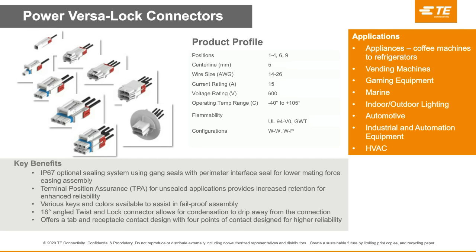Thank you. Another new TE product line that offers sealing is Power VersaLock, a wire-to-wire product line on a 5mm centerline that offers an IP67 sealing system when used with our optional interface and gang seals. It has a current rating up to 15 amps and voltage rating up to 600 volts. Housings are UL V0 with a temperature rating from -40°C to 105°C. The flexible housing design allows use in both sealed and unsealed applications. Housings assist with error-proofing via molded-in keying that is also color-coded for each key. All housings have panel mount latches for free-hanging or panel mount applications. The scoop-proof design eliminates the possibility of bent pins during blind mating, and the plug housing has a lead-in design on the silos to prevent tabs from stubbing.